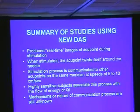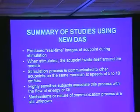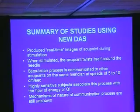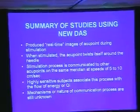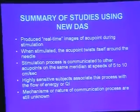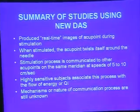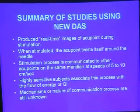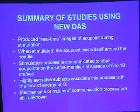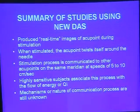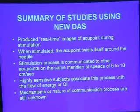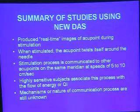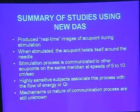We've produced real-time images of acupuncture points during stimulation — the data is collected in real time, though the images are viewed later. When stimulated, the acupuncture tissue twists itself around the needle. The stimulation process is communicated to other acupuncture points along the same meridian. The speed depends upon the individual but goes from 5 to 10 centimeters per second.